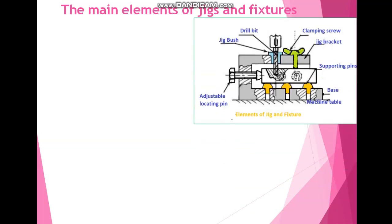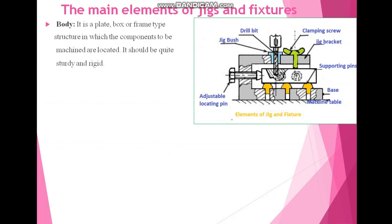Here we have a diagram of elements of jig and fixture. It will indicate the main elements of jig and fixture. We will discuss one by one. First one is body. It is a plate or box or frame type of structure in which the component is to be machined or located. It should be quite rigid and sturdy. This is what the body of this jig and fixture.